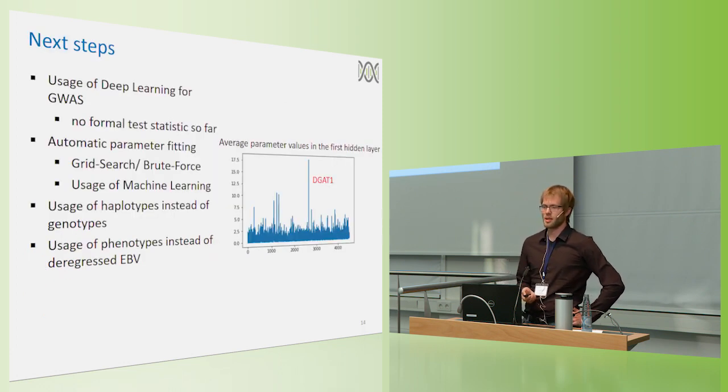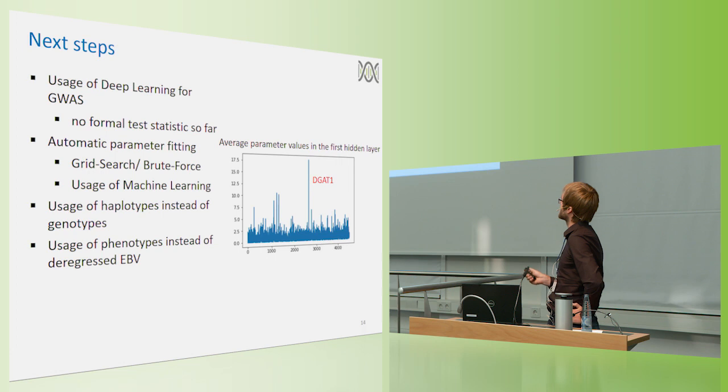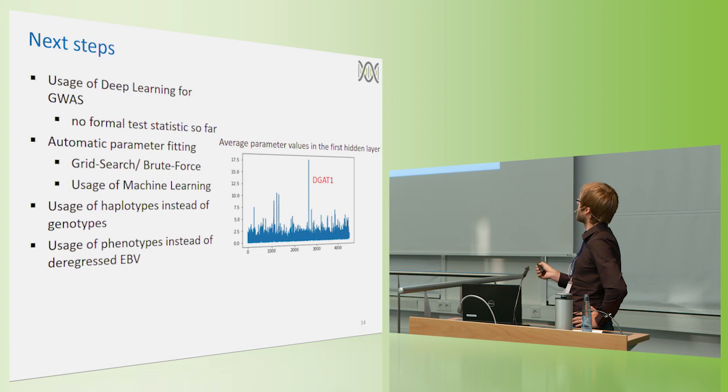With this, I come to some further steps we want to do. This is, for once, we want to extend this framework to GWAS. We so far have not developed formal test statistics for that, and that's really a general problem in deep learning that it's not so easy to see which variables have an effect in the prediction. But just when looking at the parameter values in the first layer, we saw that the region of the most known QTL in milk yield, DGAT1, is much higher than every other region in the genome.